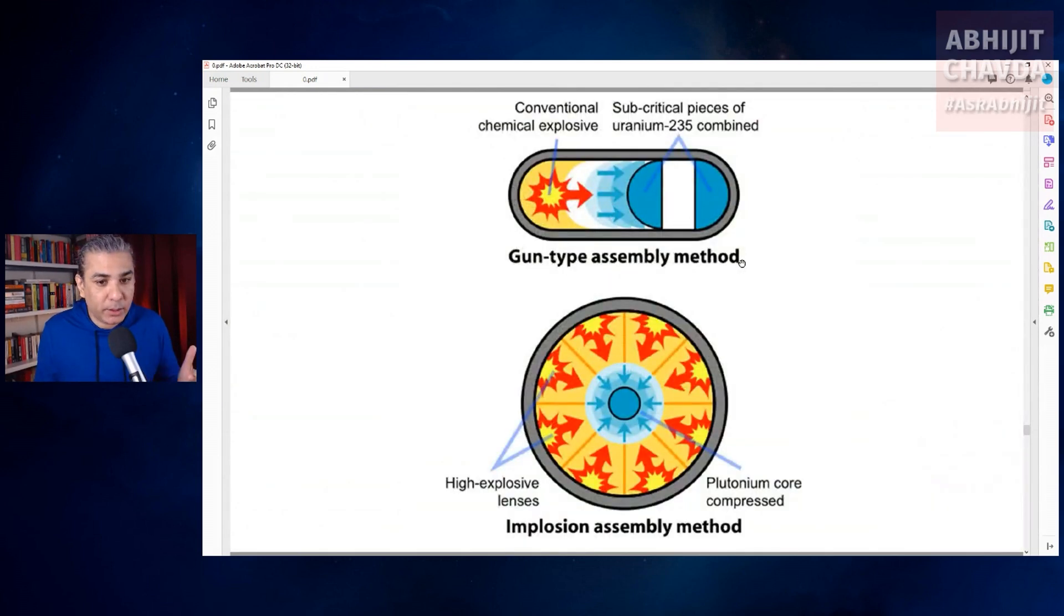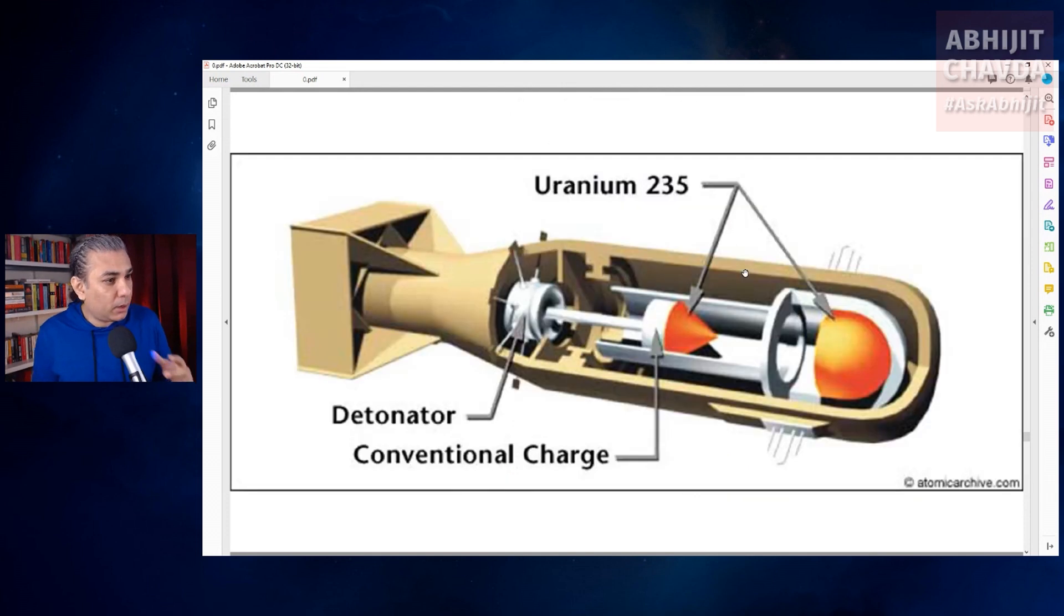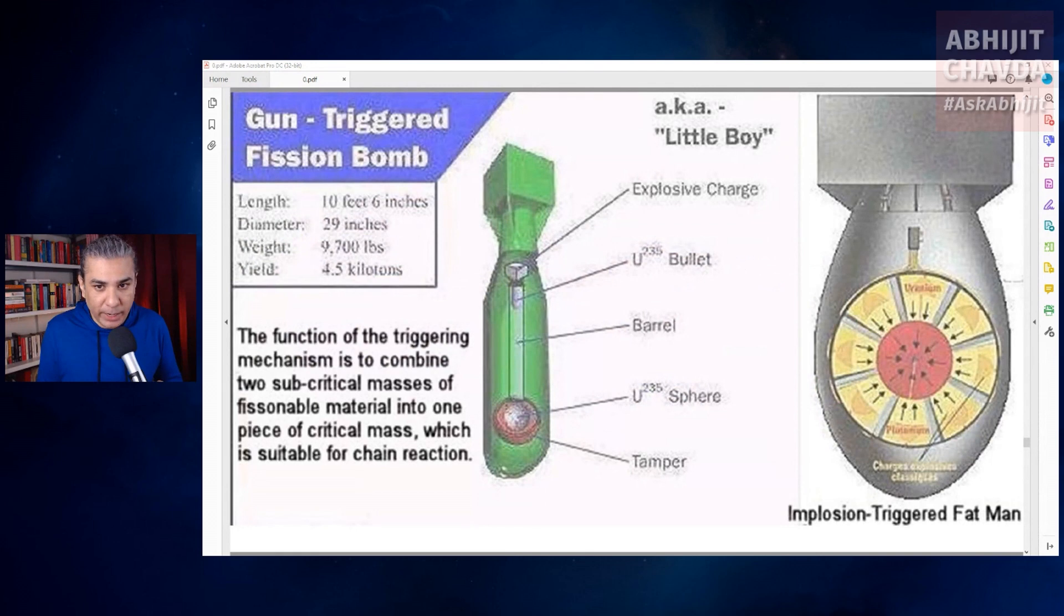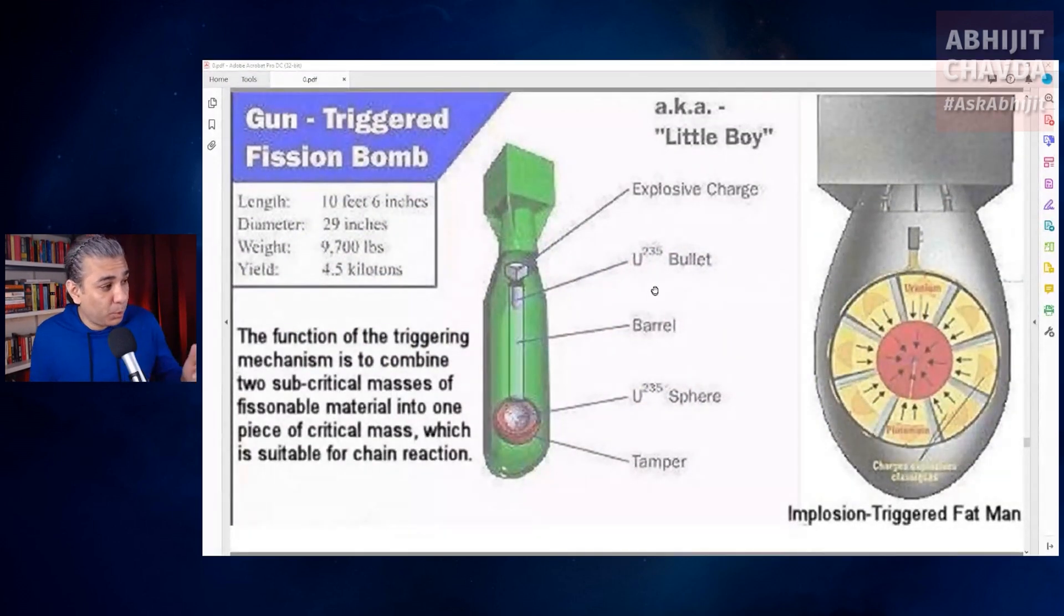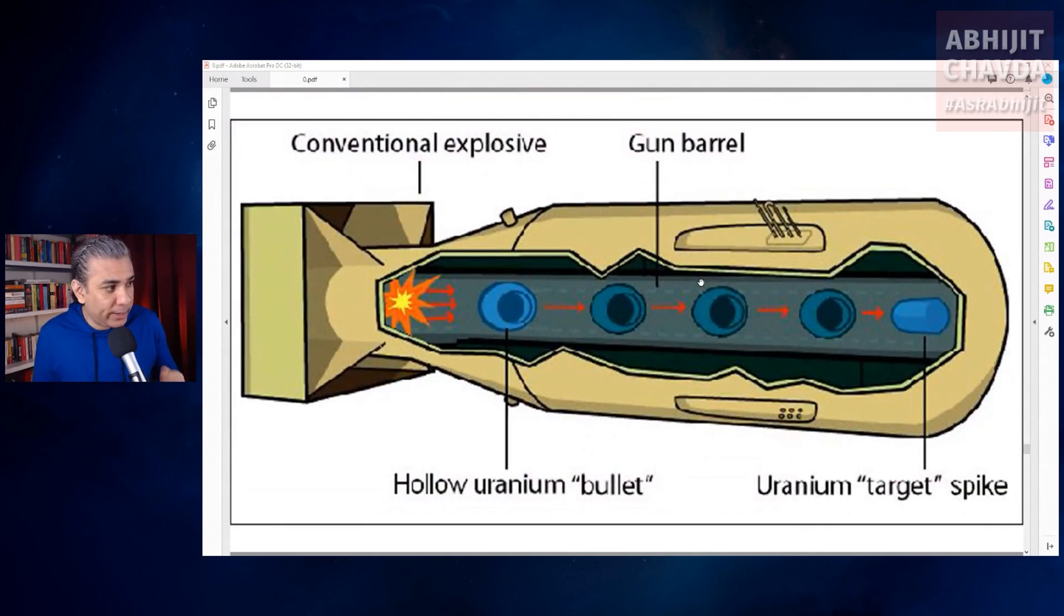This neutron generator is typically a pellet of polonium or beryllium or maybe both. The simplest way to detonate the nuclear weapon is to fire one subcritical mass into the other. A hemisphere of uranium-235 or a sphere is made around the neutron generator and a small bullet of uranium-235 is removed. This bullet is placed at one end of a long tube with explosives behind it and the sphere is placed at the other end. The weapon is detonated by triggering the explosives which fire the bullet into the target.